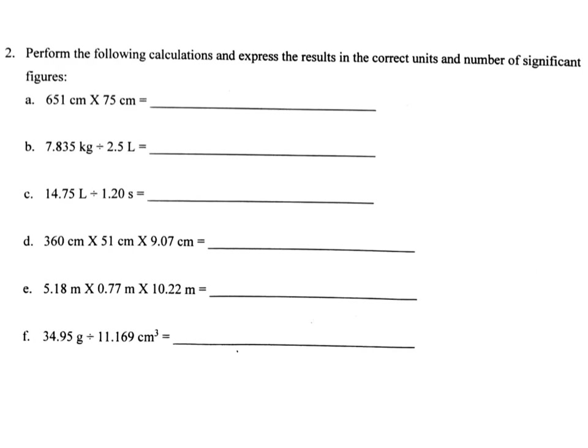This is the significant figure homework number two, part two. On this part, we are going to practice applying significant figures to multiplication and division problems. This is actually a bit simpler than doing so with addition and subtraction. Basically, you have to figure out how many significant figures your given values have, and then your answer will have the same number of significant figures as the value with the least number of significant figures given at the beginning of the problem.